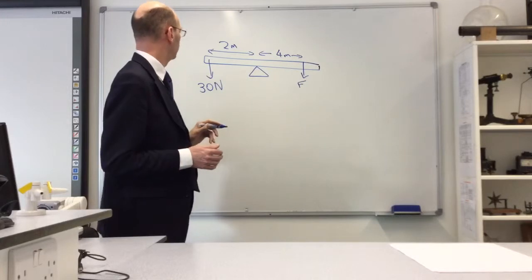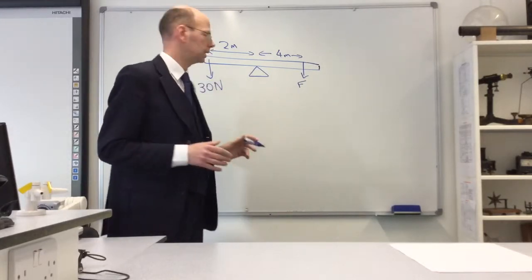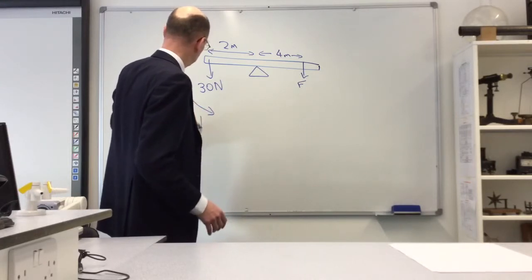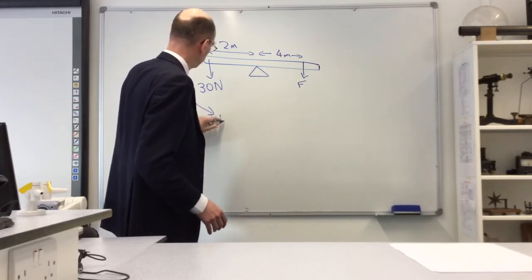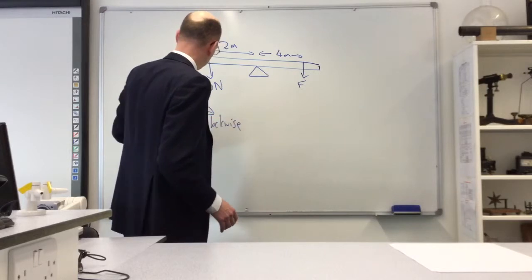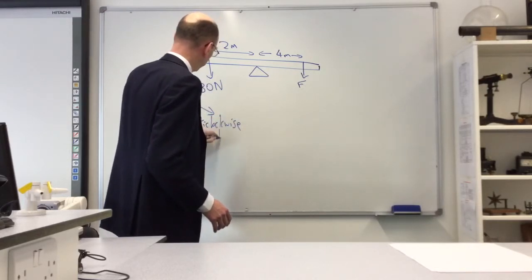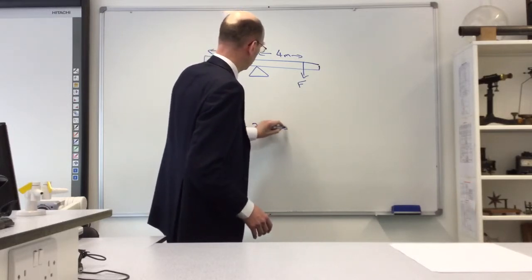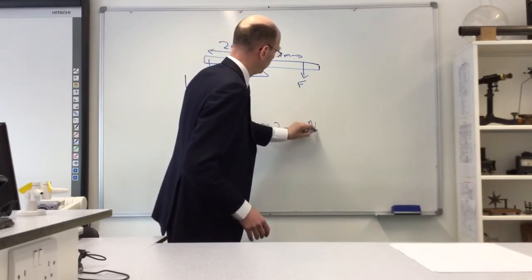Here we've got an anti-clockwise moment. The anti-clockwise moment is force times distance: 30 newtons times 2 meters equals 60 newton-meters.